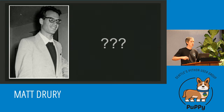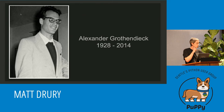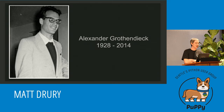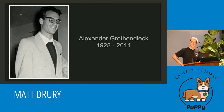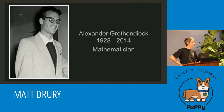Does anybody know who this is? It's not Feynman. This man's name is Alexander Grothendieck. He lived from 1928 to 2014, and the majority of his work was done between the 40s and the 60s. Does anybody know what his discipline was? Science — can we get more narrow? He's a mathematician. Pure mathematician, no applied anything, which is why none of you have ever heard of him.